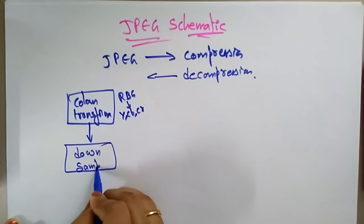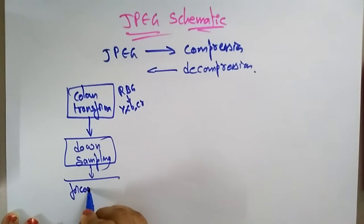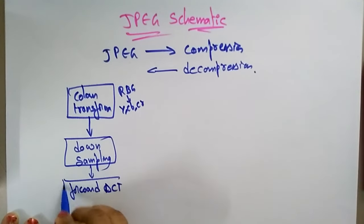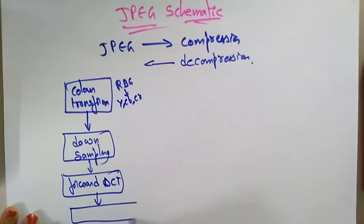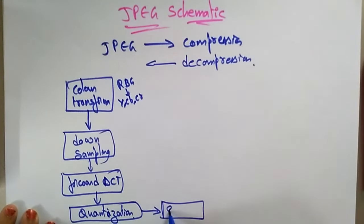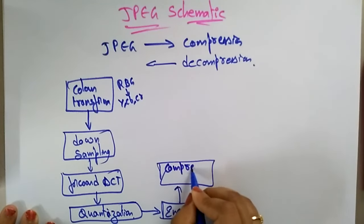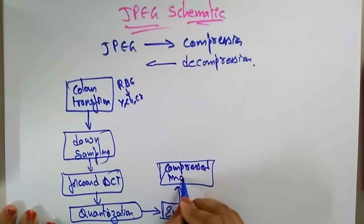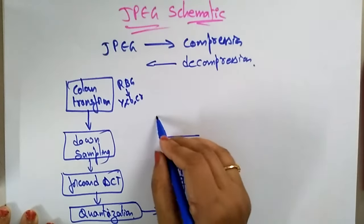After color transform, it does down sampling. Then we apply the forward DCT technique — the Discrete Cosine Transform. Then a quantization process is applied. After that it starts encoding, and then the image data is compressed. Up to here, the compression is complete.